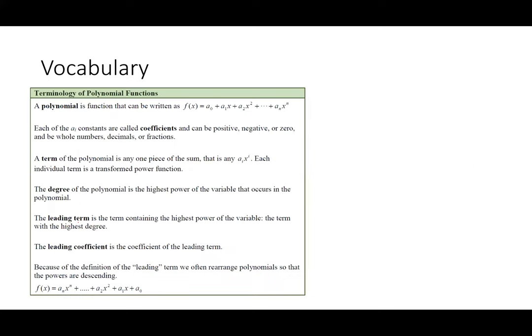A polynomial is a function that can be written in standard form where each of the 'a' values represent constants all multiplied by some power of x. Each of these 'a' values are called coefficients. They can be positive, negative, or zero; whole numbers, decimals, or fractions — anything really. A term of a polynomial is one piece of the sum — any coefficient and power of x. Each individual term is a transformed power function.